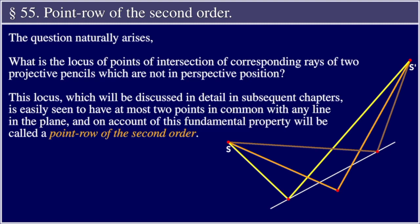This locus, which will be discussed in detail in subsequent chapters, is easily seen to have at most two points in common with any line in the plane, and on account of this fundamental property will be called a point row of the second order.